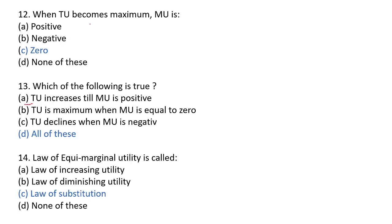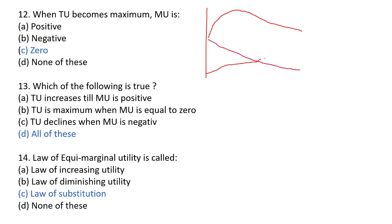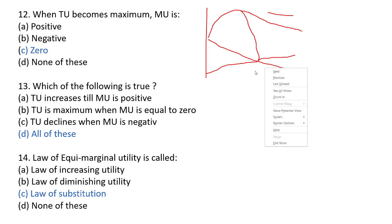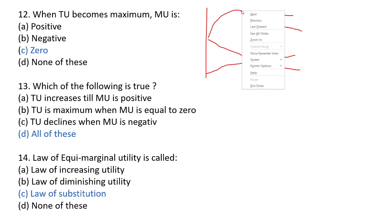Next question: when total utility becomes maximum, what happens to marginal utility? When total utility is at its maximum, the marginal utility becomes zero. And when total utility starts to decrease, the marginal utility becomes negative. So the answer will be C: zero.